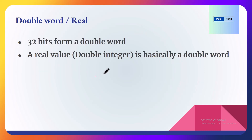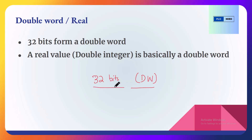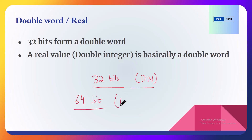Double word — two words — is equivalent to 32 bits. 32 bits form a double word. The real value, or floating point number, is represented by a 32-bit binary value, which extends the numeric range. If we want to further increase the capacity of the floating point number, we can also have long float, which is a 64-bit binary value. So that is long float.